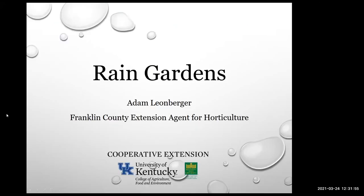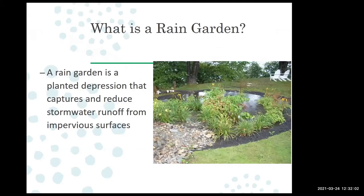Welcome everybody. Today we're going to talk about rain gardens. A rain garden is really just a seasonally wet garden — a garden planted into a depression with the purpose of capturing and reducing stormwater runoff, specifically from impervious surfaces.